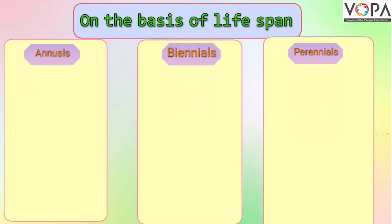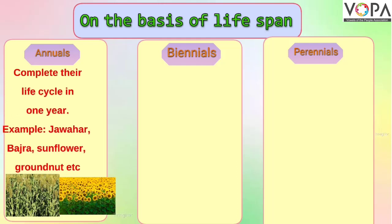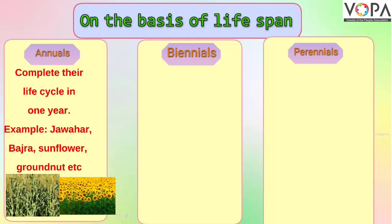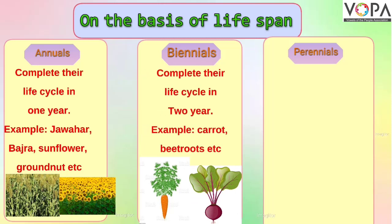On the basis of life span, plants are classified into three classes: annuals, biennials, and perennials. Annual plants like jowar, bajra, sunflower, and groundnut complete their life cycle only in one year. That means they grow and die in a year. These plants are called annuals.